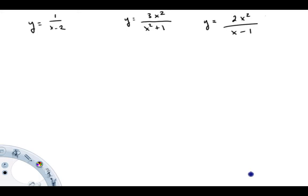Hi folks, welcome back to Math with Captain Rod. The purpose of this video is to demonstrate how to find oblique, vertical, and horizontal asymptotes. We're going to walk through three different examples here, and we're going to try to find every asymptote we can think of for all three of these functions.